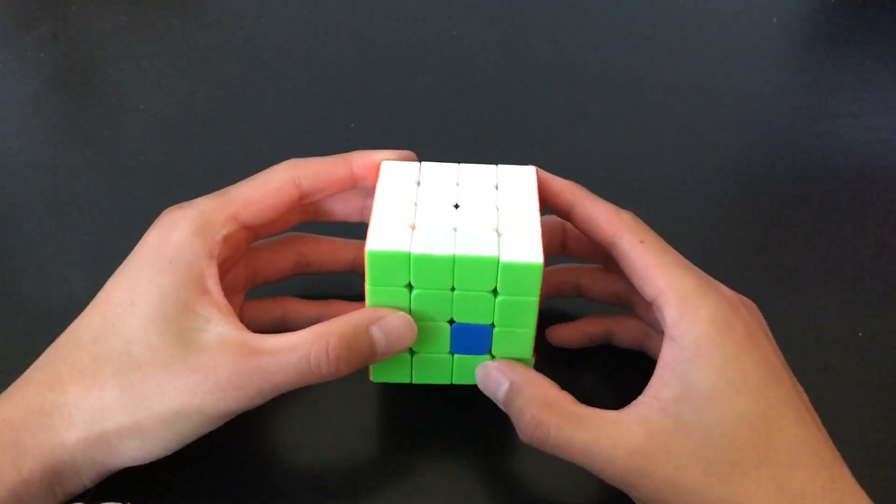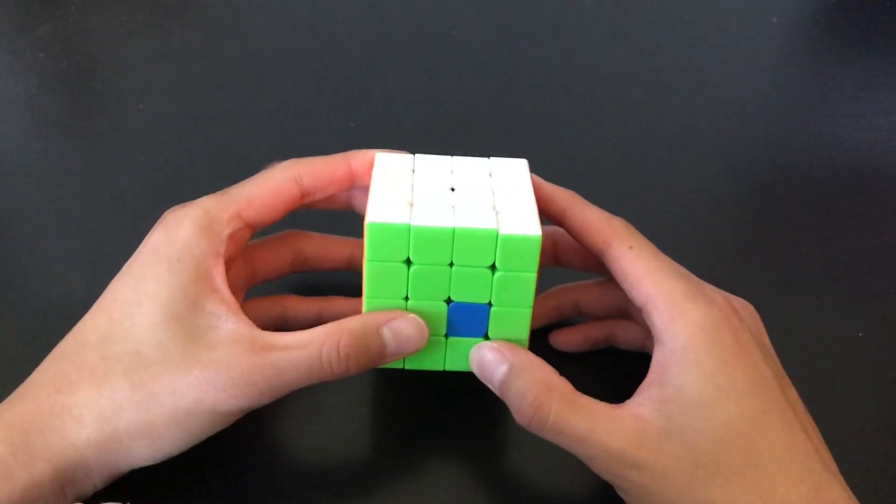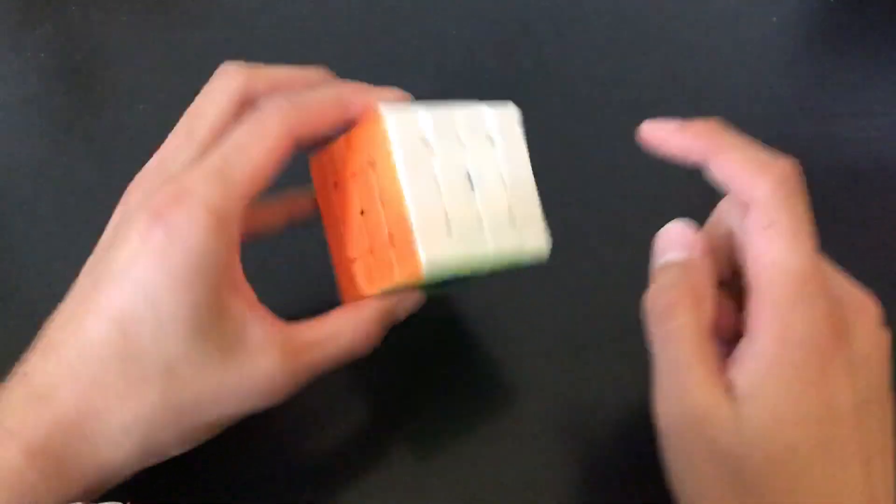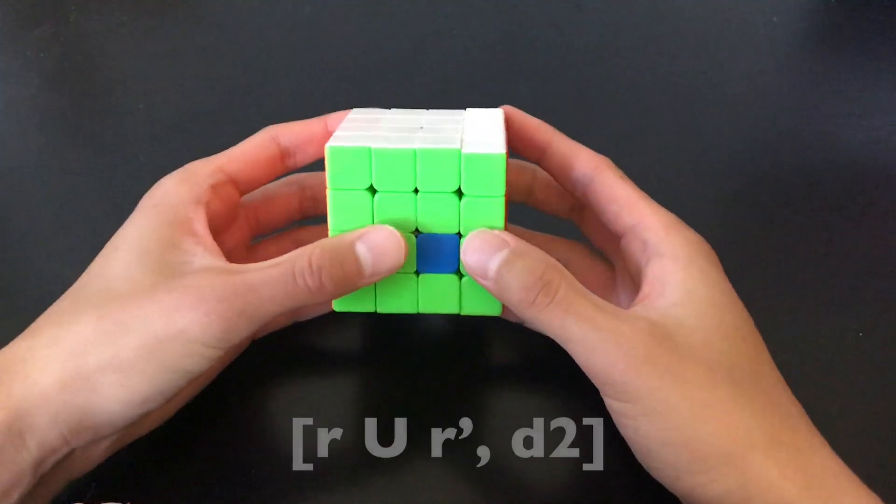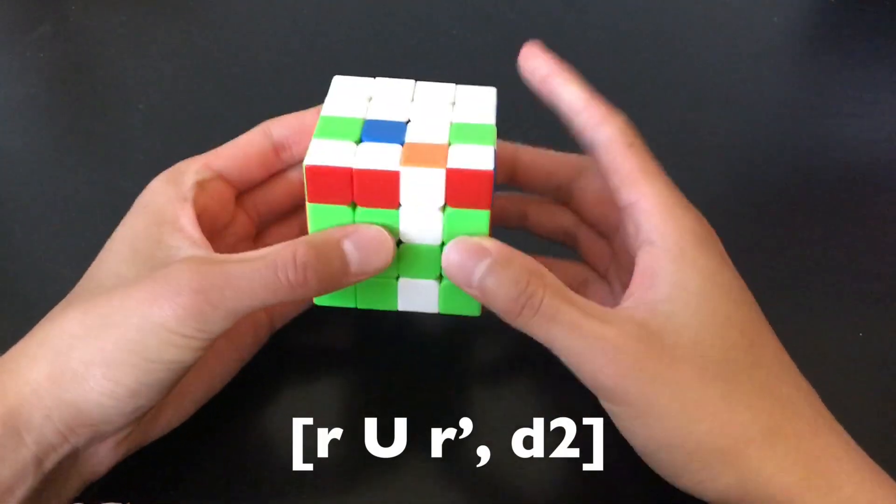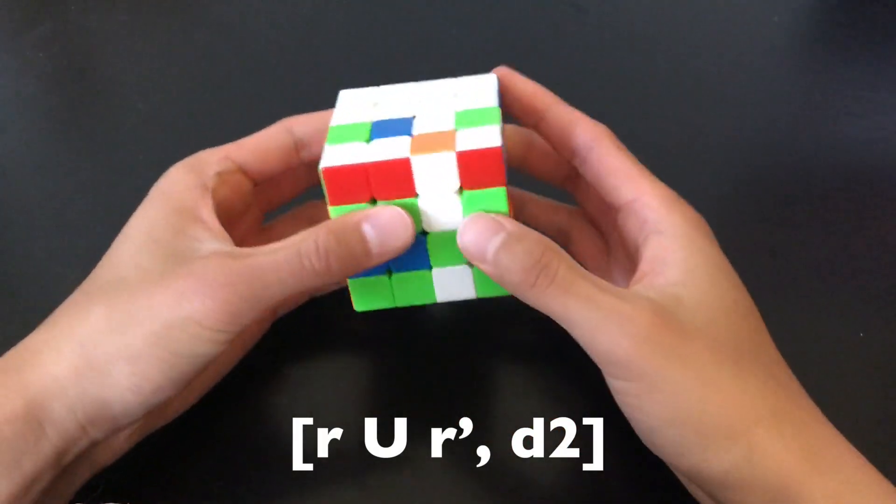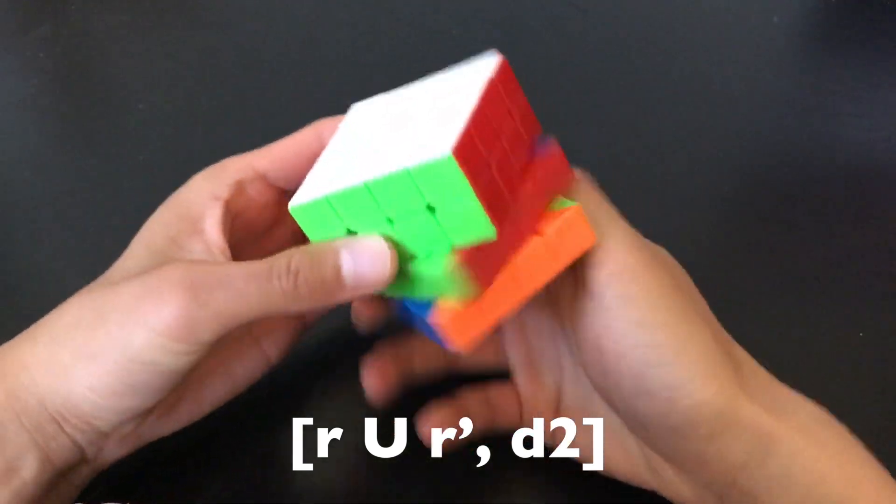Once you understand that, it's pretty easy to come up with other comms to swap only two centers. So let's say we need to swap this one and this one. Here, we can do an R U R' insertion, followed by a D2 interchange, which would swap those two centers.